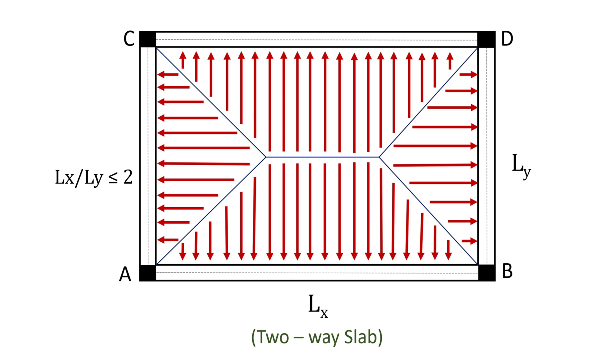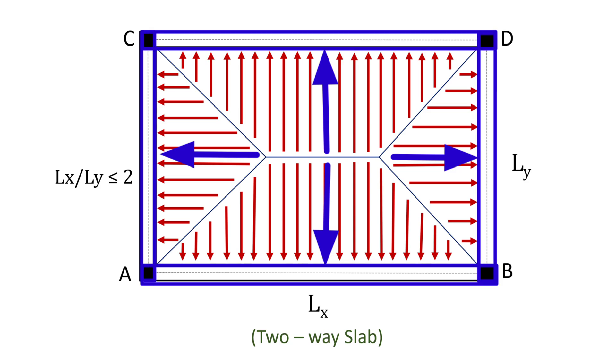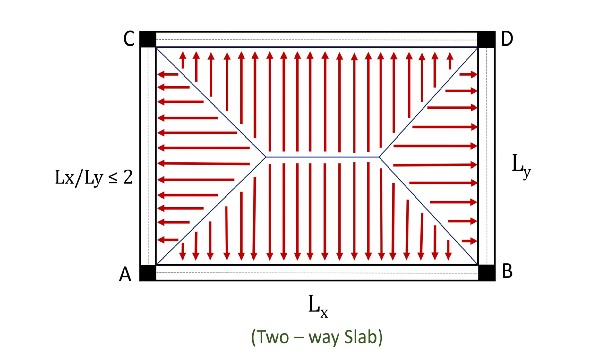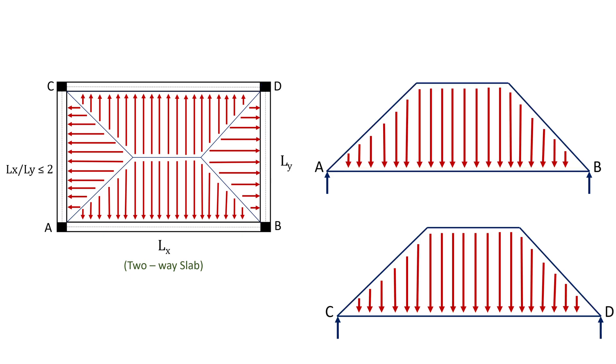However, in a two-way slab, the load distribution takes place in both directions, and the load is carried by all the beams or walls along all four sides. To understand the load distribution in two-way slabs, the slab is divided into four areas: two triangles and two trapeziums. The angles formed by the triangles with each span is 45 degrees. Loads of the triangular areas are carried as a uniformly varying load by the supports along the shorter spans, and the trapezoidal loading is carried by the supports along the longer spans.